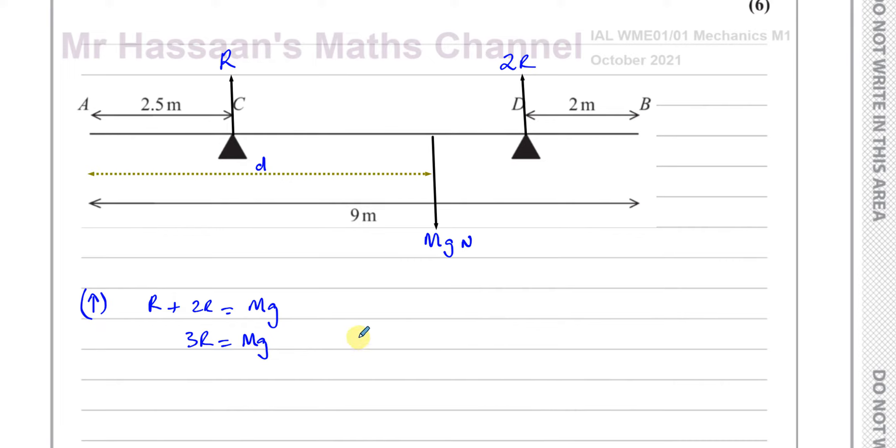Another thing we can say is if we take moments about the point A. The reason being because we want to find the value of D. And we have the values of R in terms of each other. So it's not like one of them is unknown completely. If we had to eliminate one of them we would take moments about C or D. But here I think taking moments about A will probably be most sensible. So if we look at the clockwise moments about A you just have the weight times D, the weight times the distance.